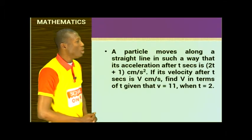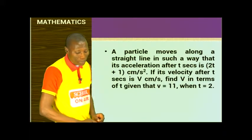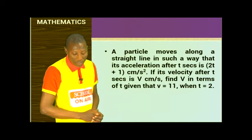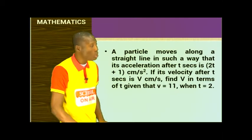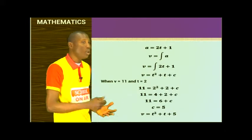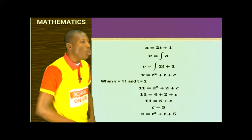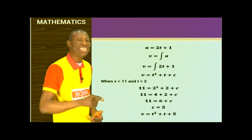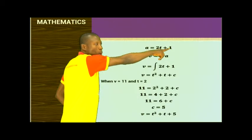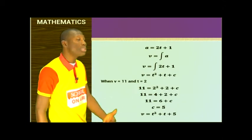Another question: a particle moves along a straight line such that its acceleration after T seconds is 2T plus 1 cm/s². Its velocity after T seconds is V cm/s. Find V in terms of T given that V equals 11 and T equals 2. We are given acceleration and need to find velocity. Since integrating acceleration gives velocity: V equals integral of (2T plus 1) dT, which gives T squared plus T plus C.